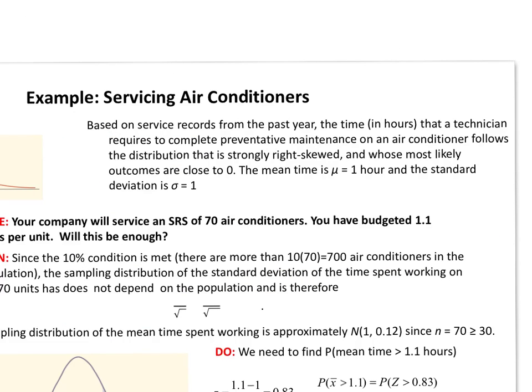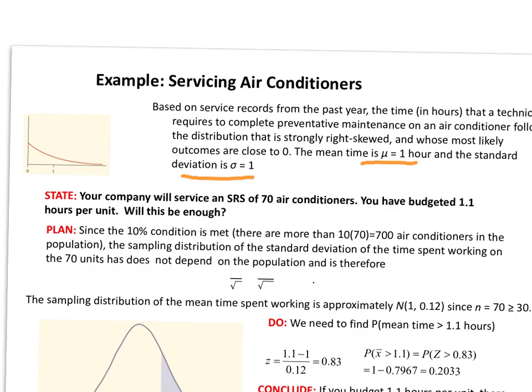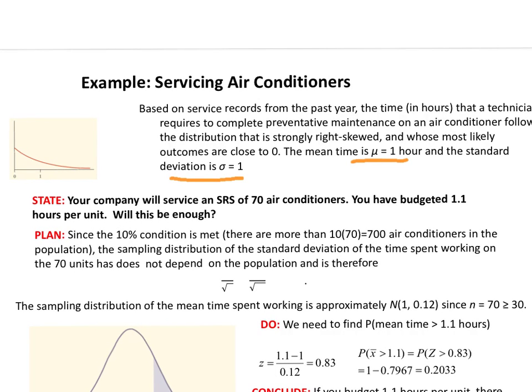So here's an example problem shown how to solve a problem of this nature from beginning to end. This is a situation involving a company who services air conditioners, trying to keep track of how long it takes their technicians to complete an average service call. And so this is quantitative in nature because it's measuring time. And it certainly makes sense to talk about one and a half hours, over six and a half minutes, etc. So taking averages makes sense. So if you notice here, the mean time, this is the population, the mean time is one hour and the standard deviation happens to also to be one. And so the question comes up here is, does your company, if you take a simple random sample of 70 air conditioners, and we've budgeted 1.1 hours per unit, a little bit higher than what the mean is, will this be enough?